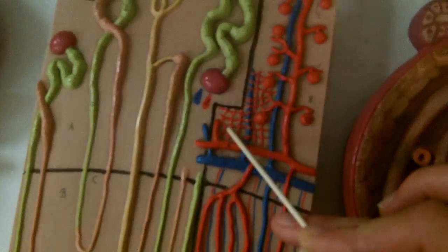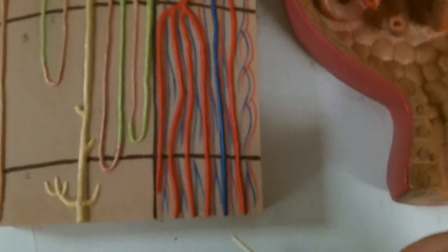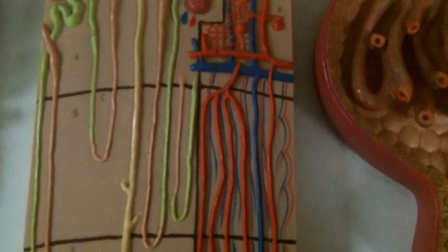One more thing. These right here are representing the peritubular capillary bed and these long capillaries here are representing the vasa recta.